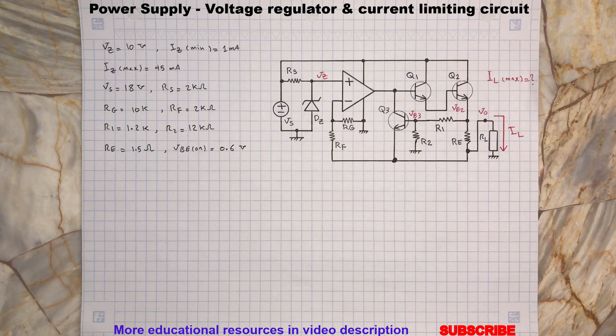So let's start calculating the output voltage and then determining the maximum and short circuit currents. But before we will check the Zener diode biasing to make sure it can be on in order to provide the reference voltage.